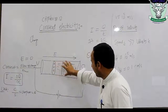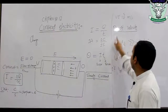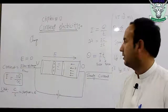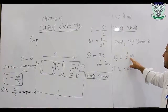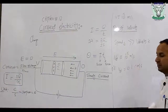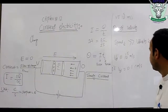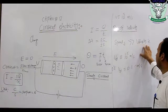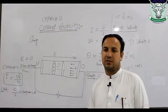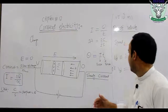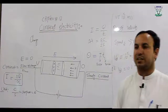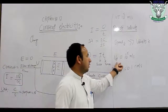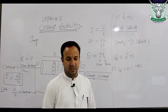The drift velocity is the velocity of electron movement in a conductor under an applied field. Drift velocity is approximately 10^-5 meters per second, or 0.1 centimeters per second. Electrons are in random pre-motion, and drift velocity represents the net directed movement.